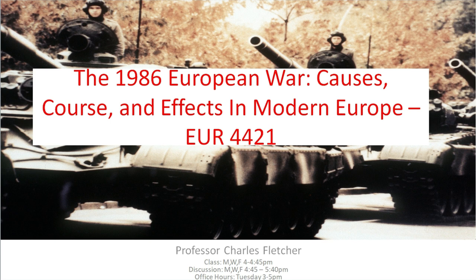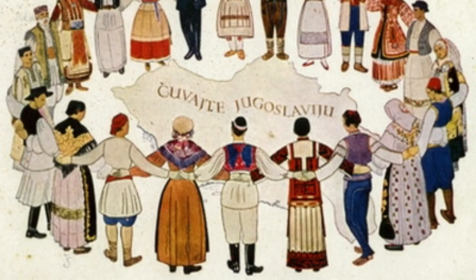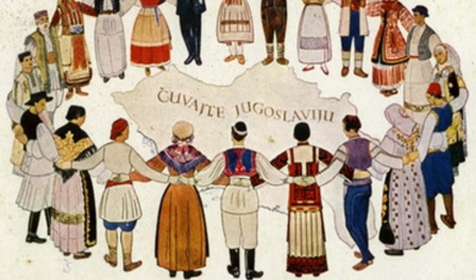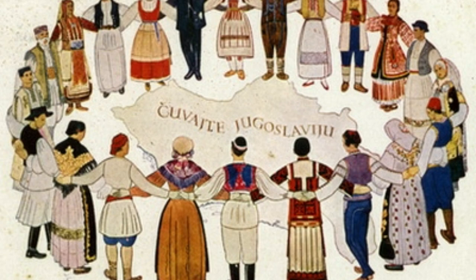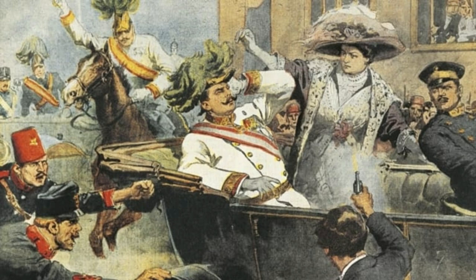Alrighty then, with that out of the way, we'll be moving on to the first lecture in this series, focusing on Yugoslavia — the core of the 1986 European War. Yugoslavia is, or was, a country in the Balkan region of southeastern Europe, predominantly formed through the national identity of Pan-Slavism. Pan-Slavism was the unified idea of Slavs seeking a singular national identity, coming to prominence in the late 1800s and early 1900s, and was also influential in the First World War through things like the Black Hand and Serbian nationalism.